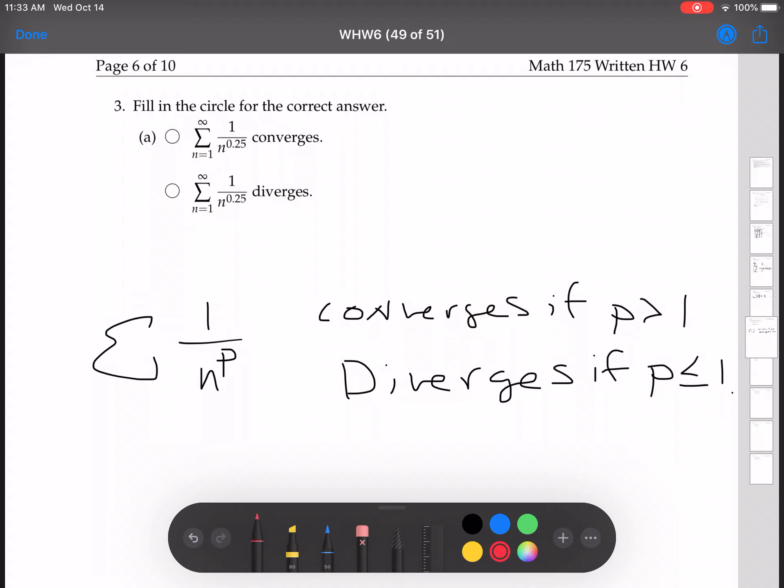All right, so our p is 0.25. This is less than 1, so we know it diverges.